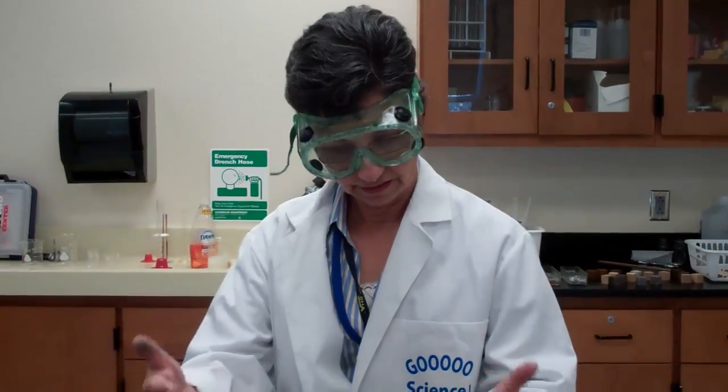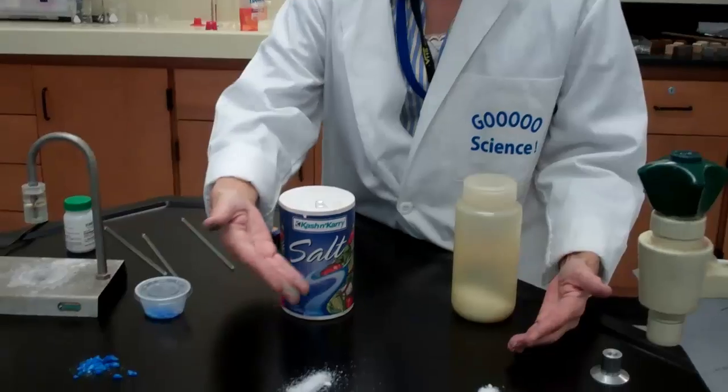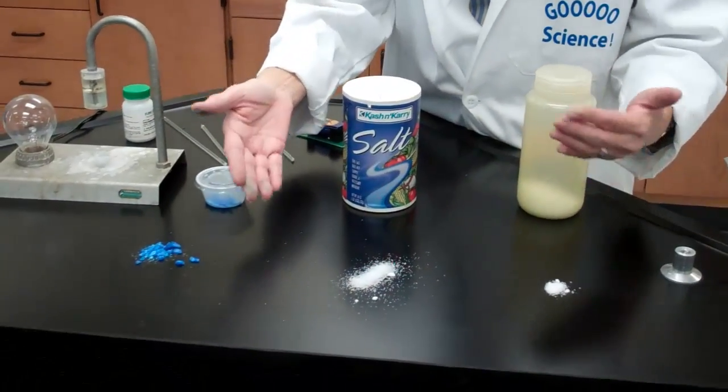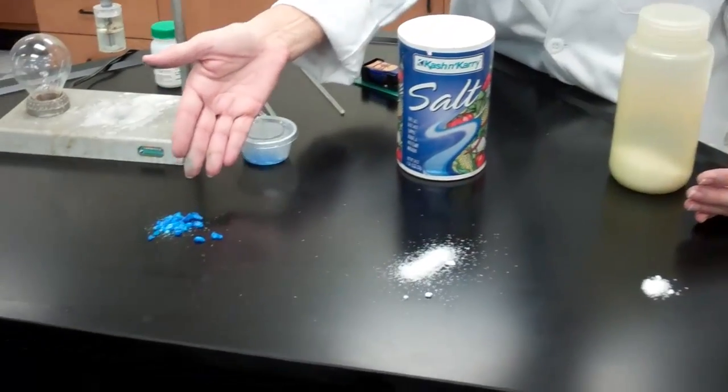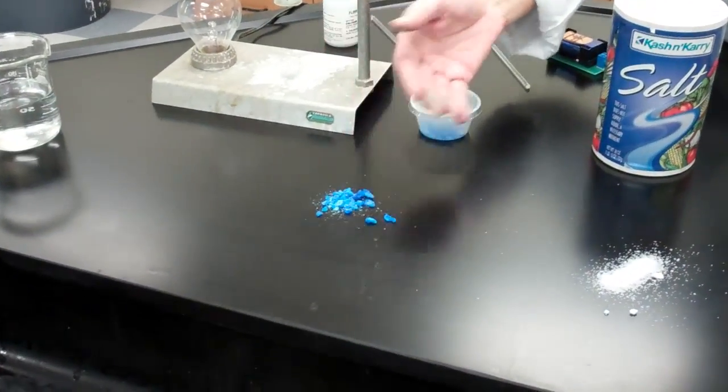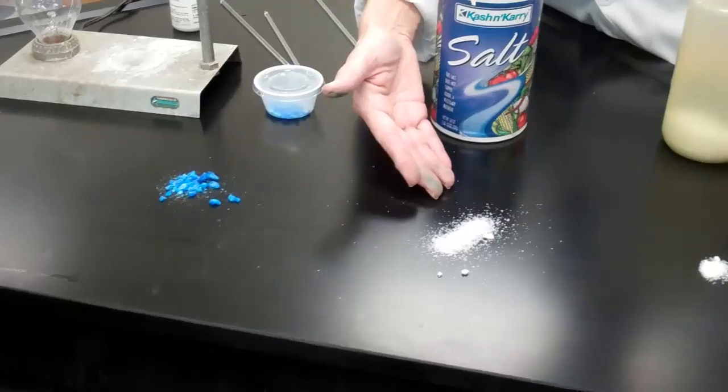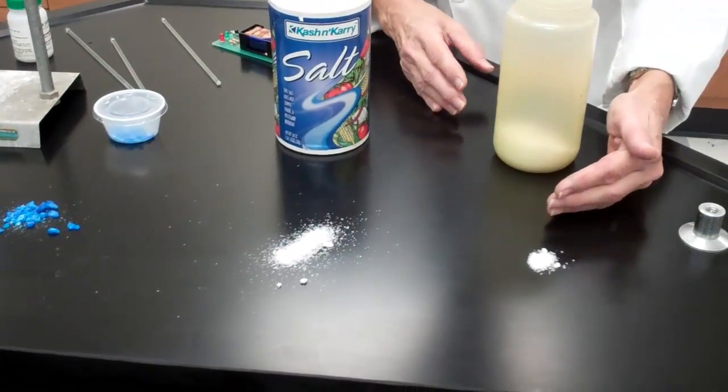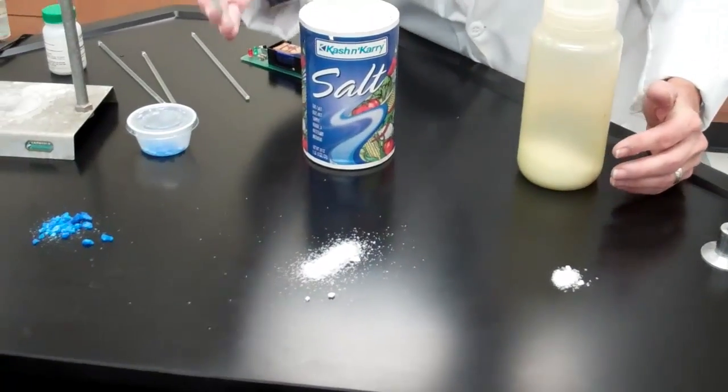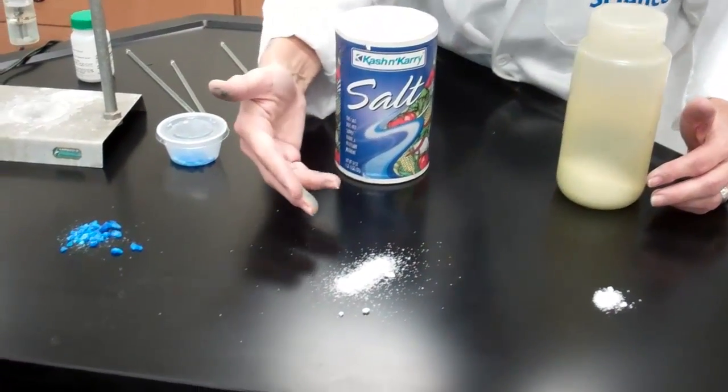So I'm looking at some ionic salts here. And as you can tell, they're varied colors. We have three of them here. I have a blue one. This is copper sulfate pentahydrate. This is sodium chloride. And this one over here is potassium iodide.